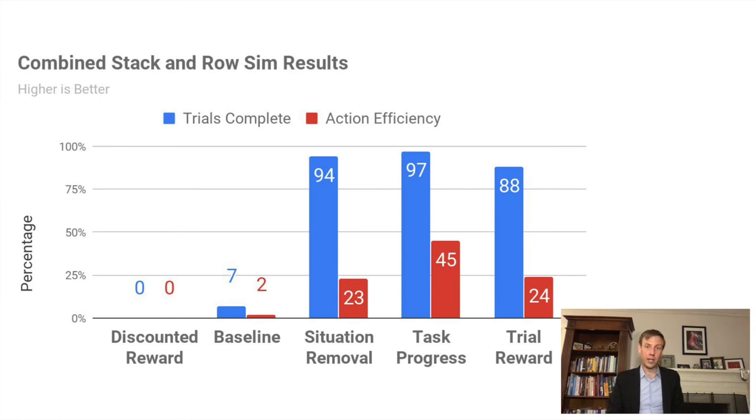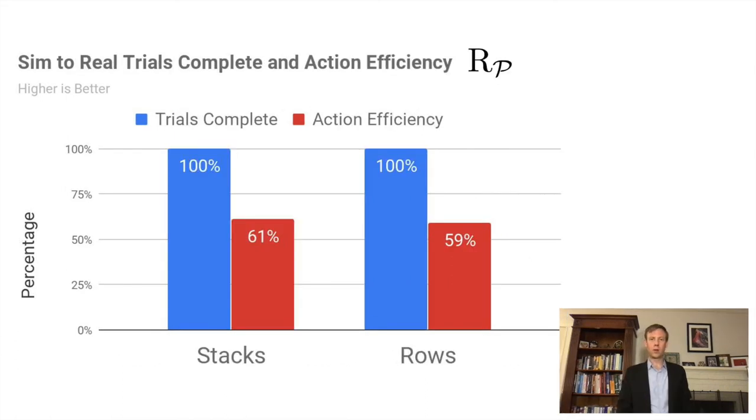Now we are up to one of our key insights because as you can see, the addition of situation removal leads to a phenomenal performance jump with 94% of trials complete. Then as we add task progress on top of this, the rate grows to 97% with an additional big jump in action efficiency from 23 to 45%. Finally, you can see that the trial reward has some training efficiency trade offs. It is actually the best stacking algorithm, but the row making performance was significantly lower. So combined, 88% of trials are completed successfully. We directly load the best simulation models for sim to real transfer, and we complete 100% of both stacking and row trials with 61% and 59% action efficiency, respectively.